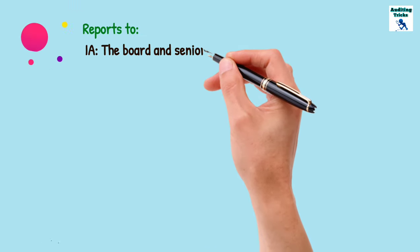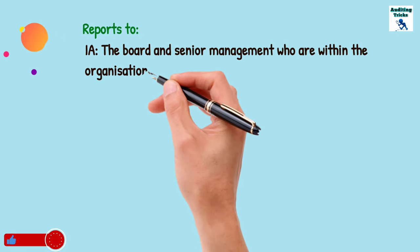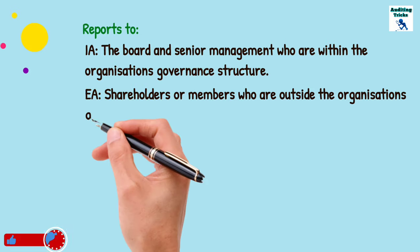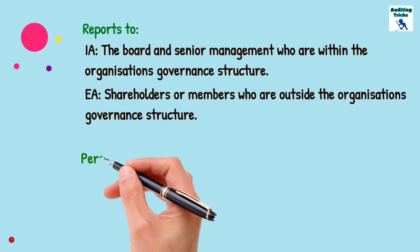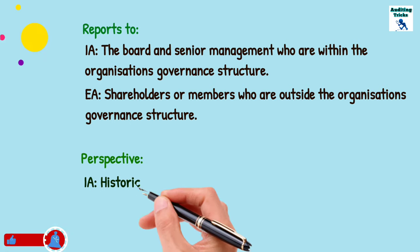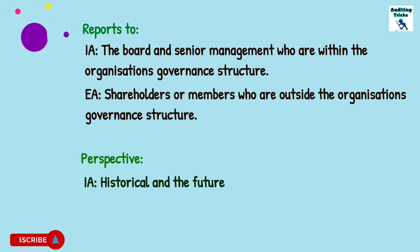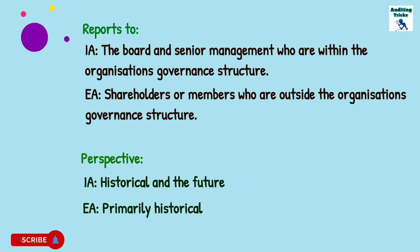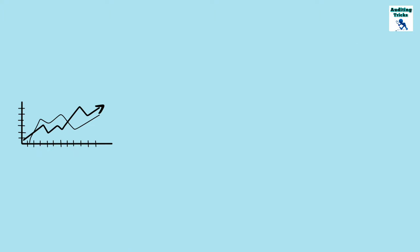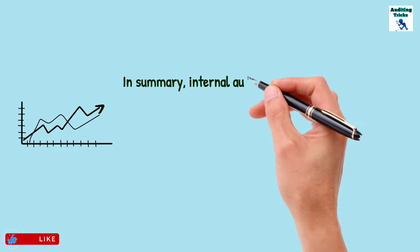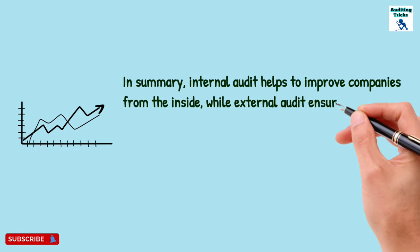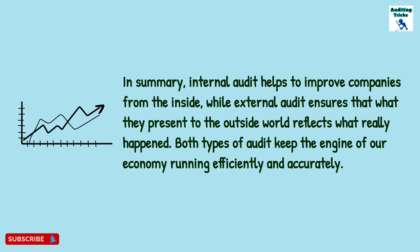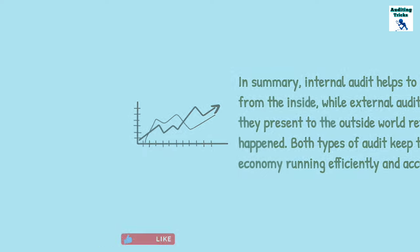Regarding reporting, internal audit reports to the board and senior management who are within the organization's governance structure. However, external audit reports to the shareholders or members who are outside the organization's governance structure. In terms of perspective, internal audit's perspective is both historical and future-oriented, whereas external audit is primarily historical. In summary, internal audit helps to improve companies from inside, while external audit ensures that what they present to the outside world reflects what really happened. Both types of audit keep the engine of our economy running efficiently and effectively.